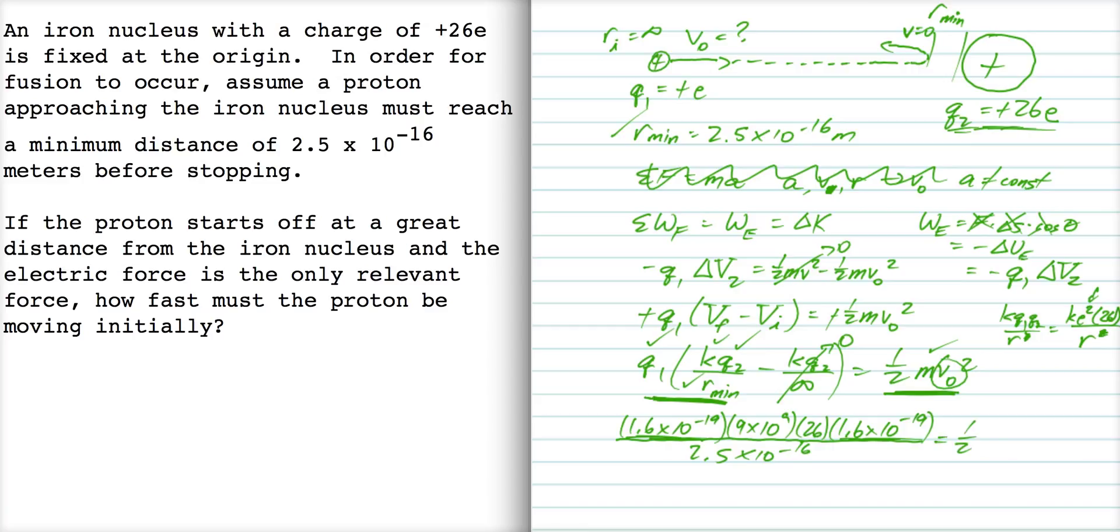Now we set that equal to one-half times 1.67 times 10 to the minus 27, that's the mass of a proton from our formula sheet. And when we solve for v naught squared, we get 2.87 times 10 to the sixteenth, so v naught is 1.7 times 10 to the eighth.